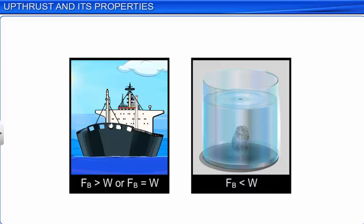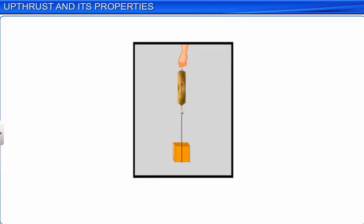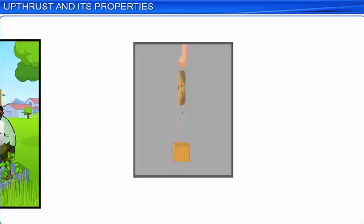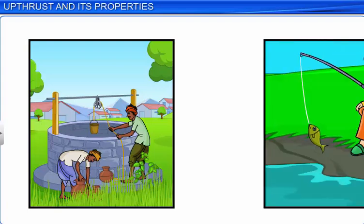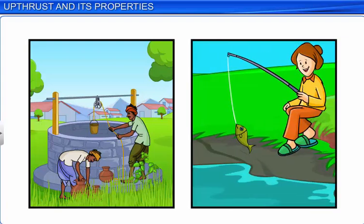Upthrust, being a force, is measured in Newtons (N). Lifting a bucket of water from a well, pulling a fish out of water, and a body weighing less in air than in vacuum are examples of the effects of upthrust.